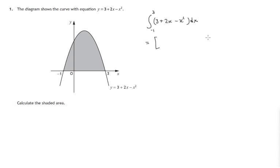So square brackets, which means we're eventually going to plug in these values for x to work out our final answer. We're integrating 3 plus 2x minus x squared, between negative 1 and 3.